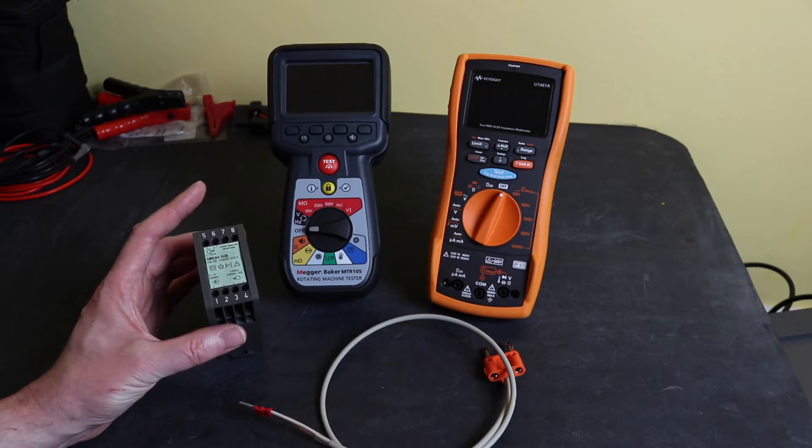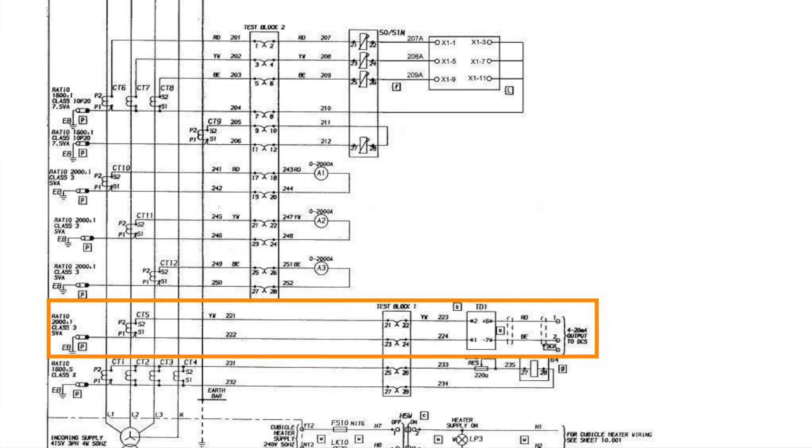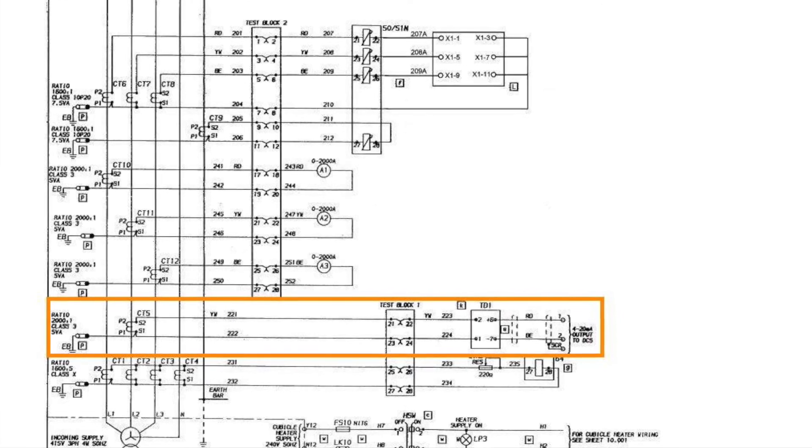So for those who have not come across it I'll stick a circuit diagram up that shows that a little bit better. So the current transducer circuit is within the orange box on the drawing.